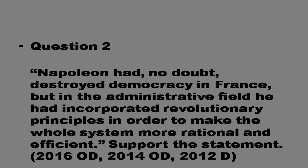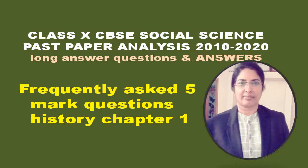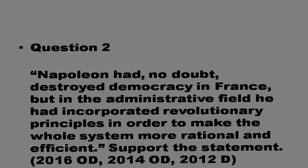Napoleon brought revolutionary changes in the administrative field in order to make the old system rational and efficient. The Civil Code of 1804, usually known as the Napoleonic Code, brought the first major change — doing away with all privileges based on birth, establishing equality before law, and securing the right to property. Administrative divisions were simplified, the feudal system was abolished, and peasants were freed from serfdom and manorial dues.